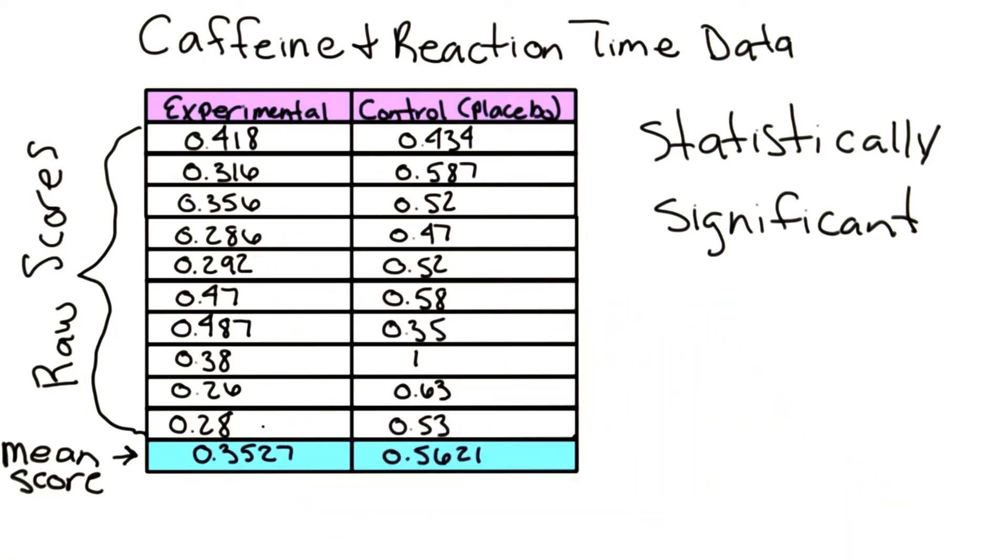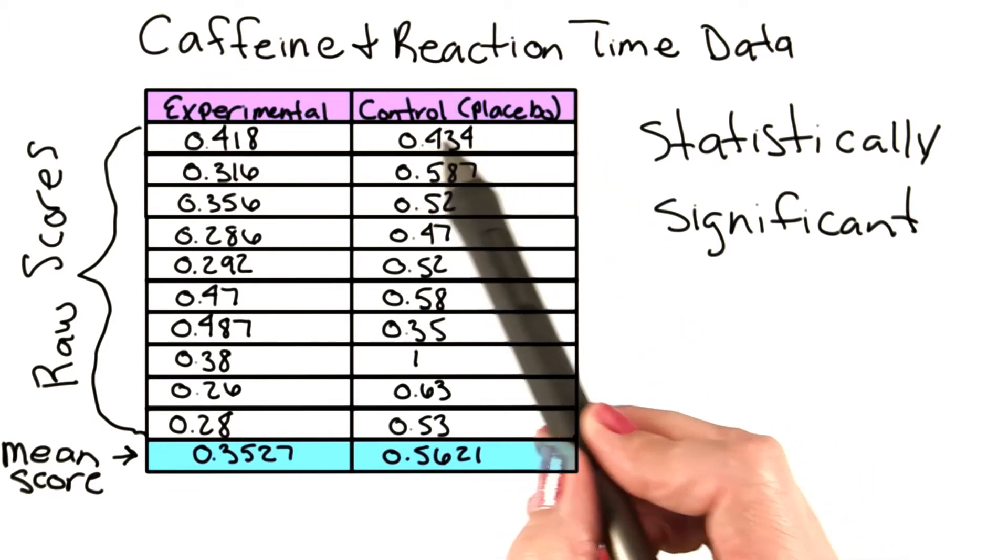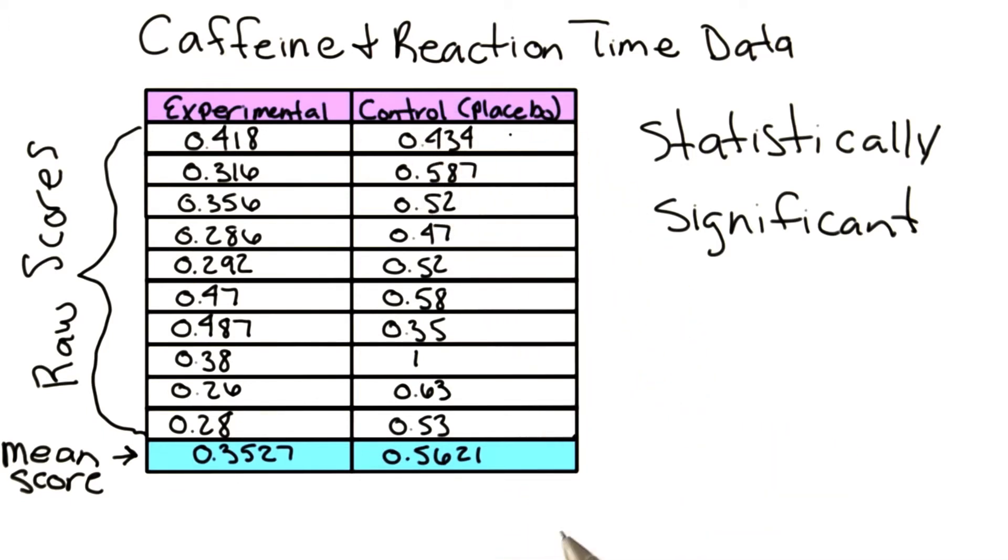So for our caffeine and reaction time experiment, we took each individual's reaction time and got an average. For our experimental group, the average or mean score on reaction time was 0.3527 seconds. And for our control or placebo group, our average reaction time was 0.5621.